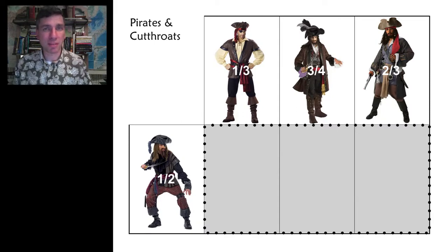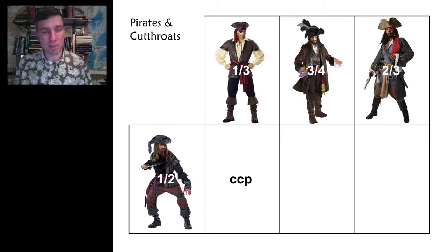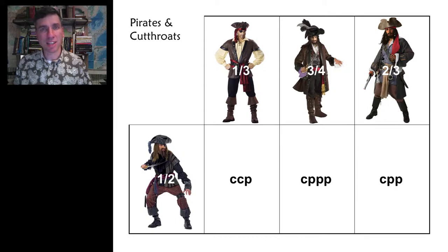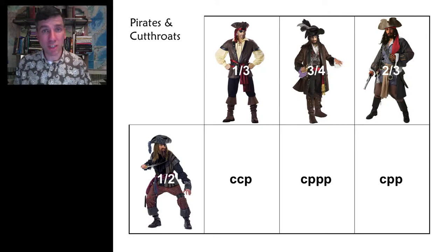How might we go about that? One example might be that we could say CCP — Cutthroat, Cutthroat, Pirate — would go in the first cell. That satisfies the requirement that one-third of those in the first cell are pirates. In the second cell, we could put CPPP: one cutthroat and three pirates. And in the last cell, CPP. This satisfies all of the individual cell requirements. Unfortunately, we have not satisfied that the whole jail population is equally pirates and cutthroats — here there are more pirates than cutthroats. So this didn't work.